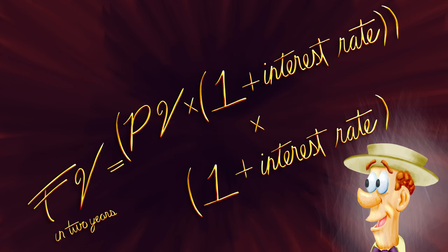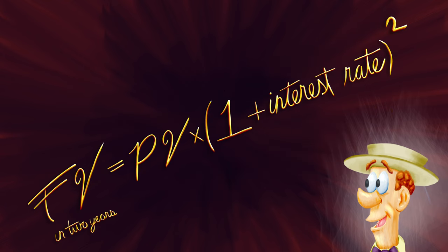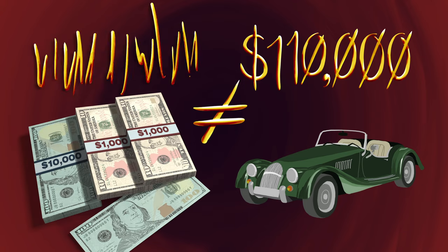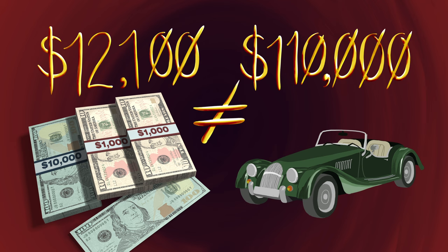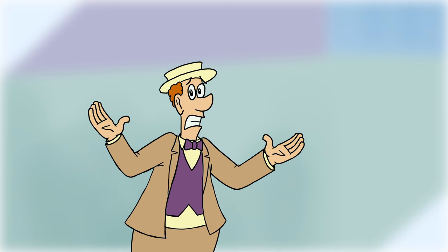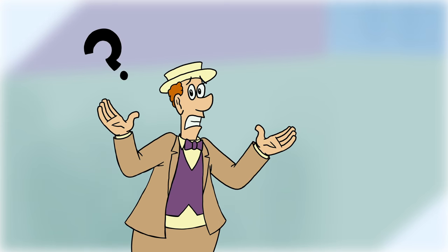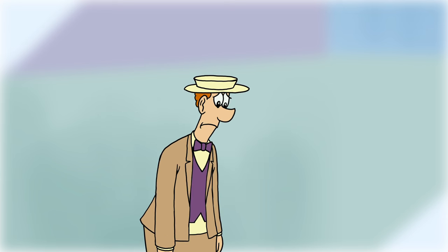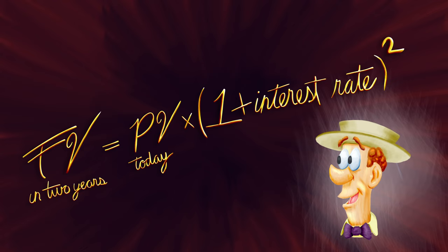We can even simplify this further by just squaring the value of 1 plus the interest rate. Sorry, Timmy — you'll have more money after two years, but you still can't afford the car. I don't know how many more years you'll have to wait, but I can tell you one way we can figure it out. Do you see that little number 2 in the equation? Any number that you put in there is the number of years that you are waiting, also known as the period.